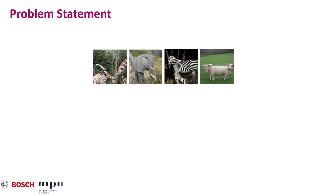Most images generated with GANs only look realistic at first glance. Often, we see that a lot of details in the images are inconsistent, or that all the right parts are there but the spatial arrangement is incorrect. We often see structures that are only partially correct, yet the generator still manages to convince the discriminator that the image is real.